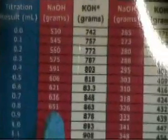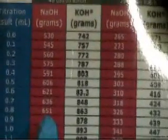0.8 on the titration results. NaOH, which is sodium hydroxide: 651 grams for a 40 gallon batch.